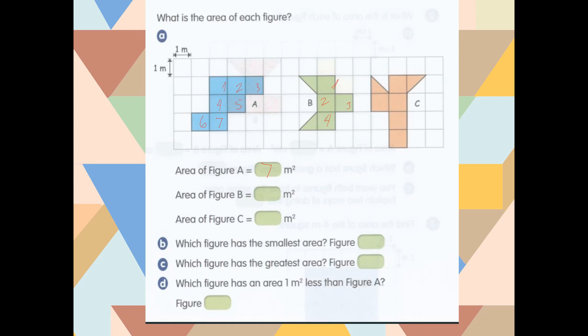How about figure C. Let's count the full squares. One, two, three, four, five. And I have two halves, that is equal to one, six square meters.